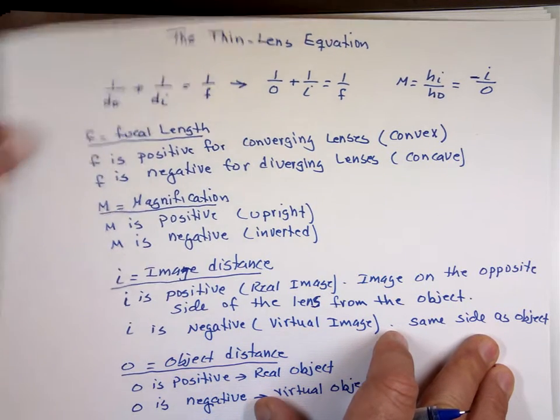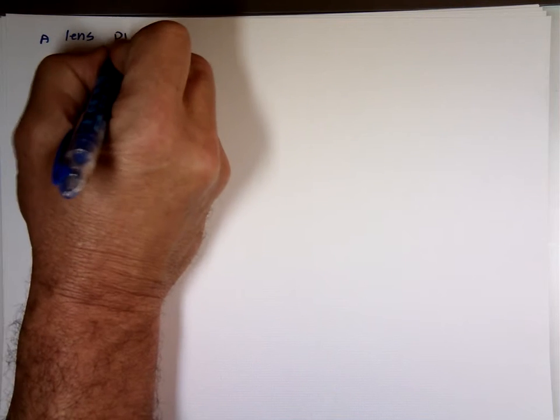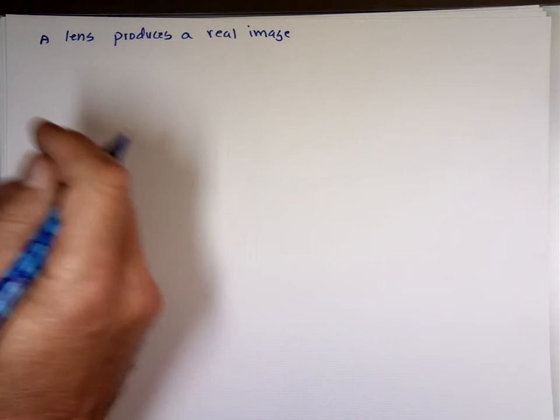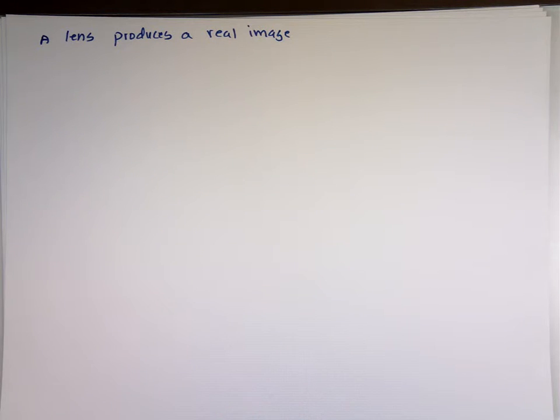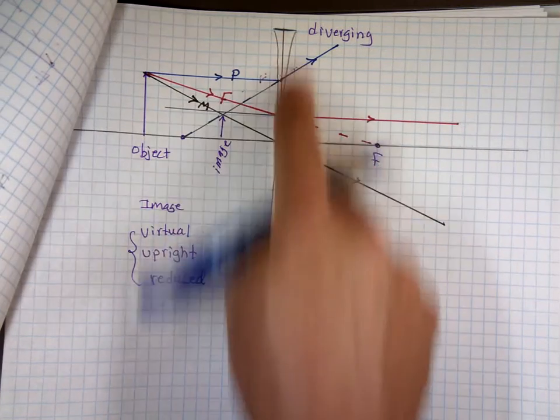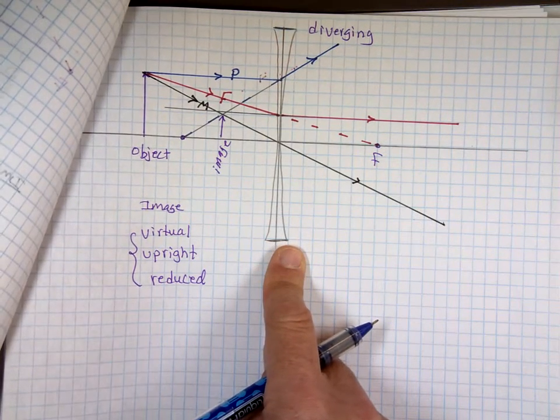If you have two lenses, I'll do one example before we're done. Let's take an example: a lens, we're not sure what type, produces a real image. Now quickly, based on what we did earlier today, I can rule out one of the lenses. Is it a diverging lens or a converging lens? A diverging lens always gives a virtual image, so it's not a diverging lens — it's a converging lens.